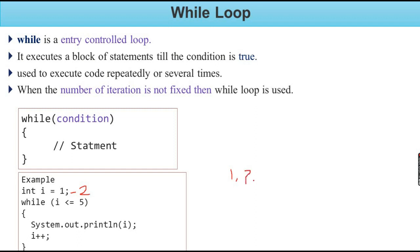It executes again. Next, `i` is incremented — `i` becomes 2, then 3. From 3 to 5, the condition check returns true. So the statement executes and the body of the loop executes. When `i` is 3, it prints 3. Then `i` is incremented.